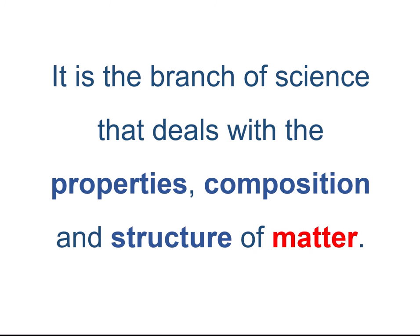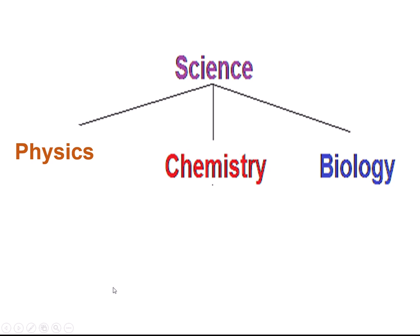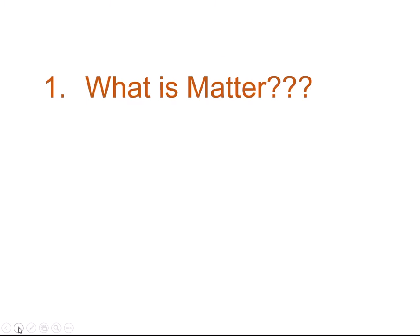Chemistry is the branch of science. The first line of the definition tells us that chemistry is a branch of science, meaning science has other branches too — physics, chemistry, and biology. After this, we talk about matter, because in chemistry we deal with the properties, composition, and structure of matter. Students, tell me: what is matter and how many states of matter are there?